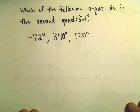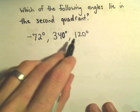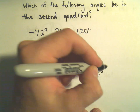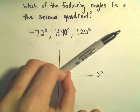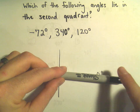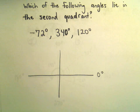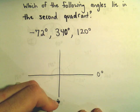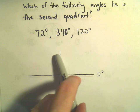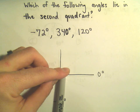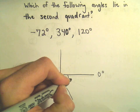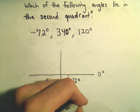Which of the following angles lies in the second quadrant: negative 72 degrees, 340 degrees, or 120? Let's talk about negative 72 first. Going clockwise, negative 90 degrees puts you at the bottom. Negative 72 degrees is going to be somewhere between 0 and negative 90 degrees, so that's in quadrant four — not right.